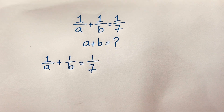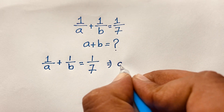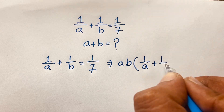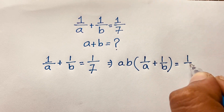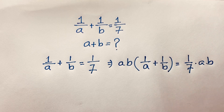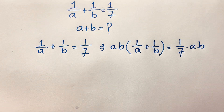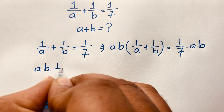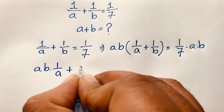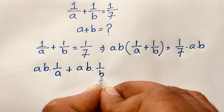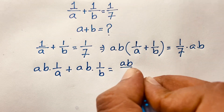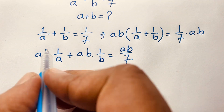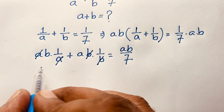Now I multiply both sides by ab. So ab times (1 over a plus 1 over b) is equal to 1 over 7 times ab. Expanding: ab times 1 over a plus ab times 1 over b is equal to ab over 7. The a's cancel and the b's cancel, giving us b plus a equals ab over 7.